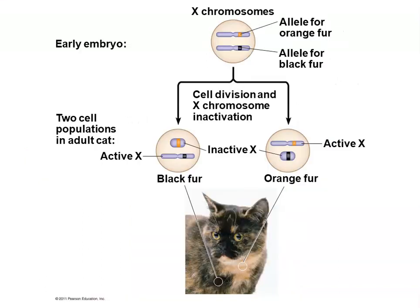One example involves alleles on the X chromosome for fur color — orange and black. In cats, you can see splotches of black and splotches of orange depending on which X chromosome was inactivated and which gene products are being produced by the active X chromosome.